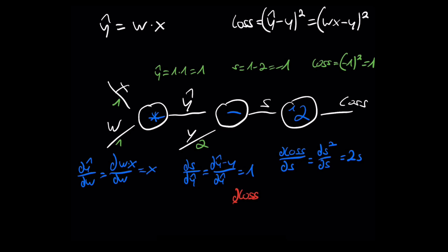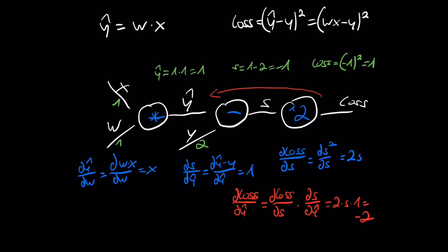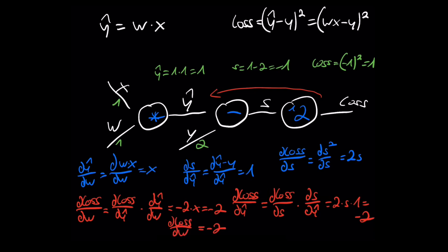Now let's do the backward pass. We calculate the gradient of the loss with respect to y-hat by applying the chain rule using the two local gradients we just computed. This is 2 times s times 1, and we know from the forward pass that s is minus 1, so this gives minus 2. The very last step is to calculate the gradient of the loss with respect to w. Again we apply the chain rule: d_loss/d_y_hat times the local gradient d_y_hat/d_w. Inserting the actual numbers: minus 2 times x, which is minus 2. We've now reached the end and can update our weights.